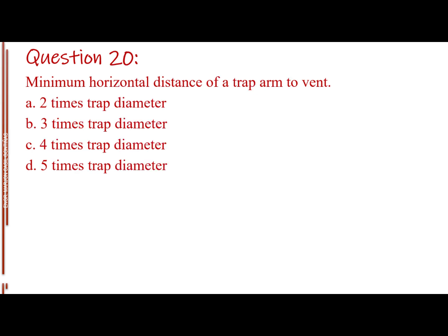Question number 18, minimum distance of a trap arm to vent. Letter A, 2 times trap diameter, letter B, 3 times trap diameter, letter C, 4 times trap diameter, letter D, 5 times trap diameter.